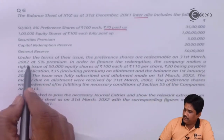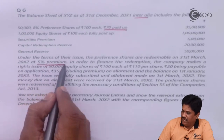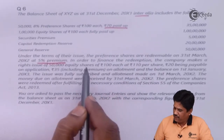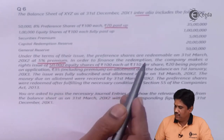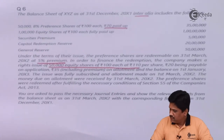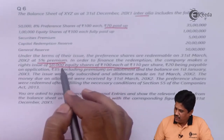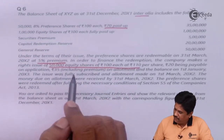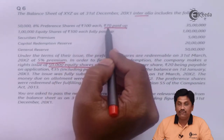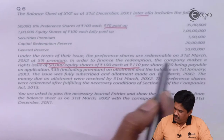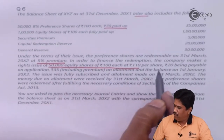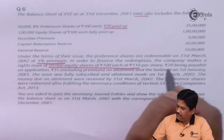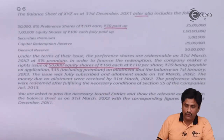Under the terms of their issue, preferences are redeemable on 31st March 20X2 at a 5% premium. To finance the redemption, the company makes a right issue of 50,000 equity shares of Rs 100 each at Rs 110 per share — Rs 20 payable on application, Rs 35 including premium on allotment, and the balance on 1st January 2003. Money collected before the redemption date counts as replacement capital.